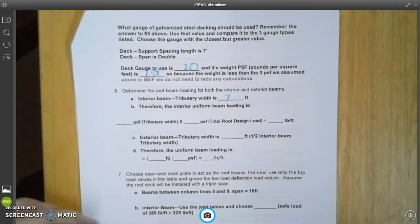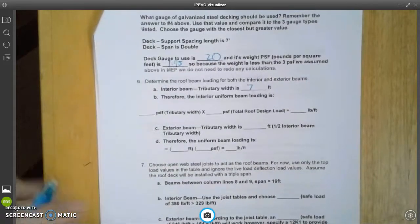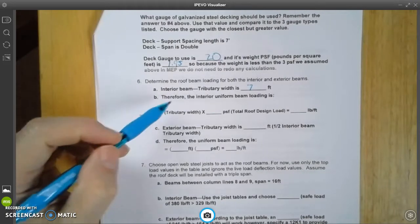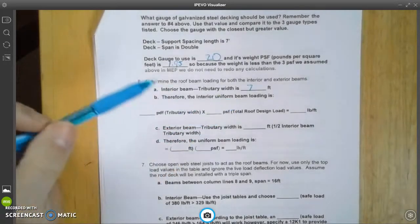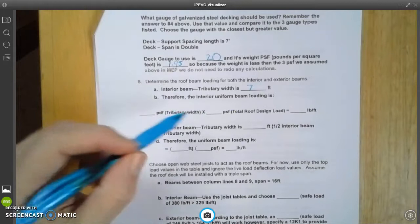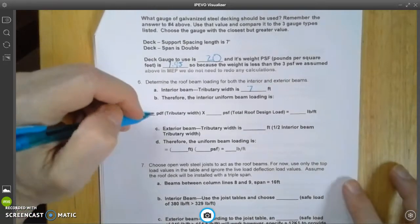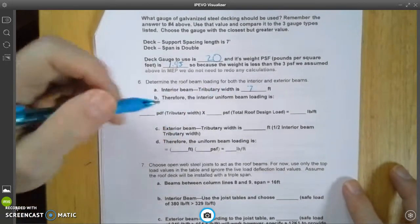Now what we need to do is calculate what they call the uniform beam loading. We're going to do that for the interior beam right now. We're going to take the tributary width, which is 7 feet,